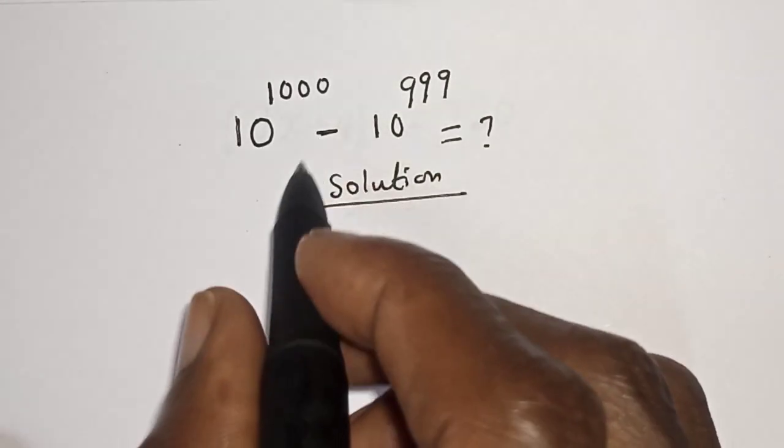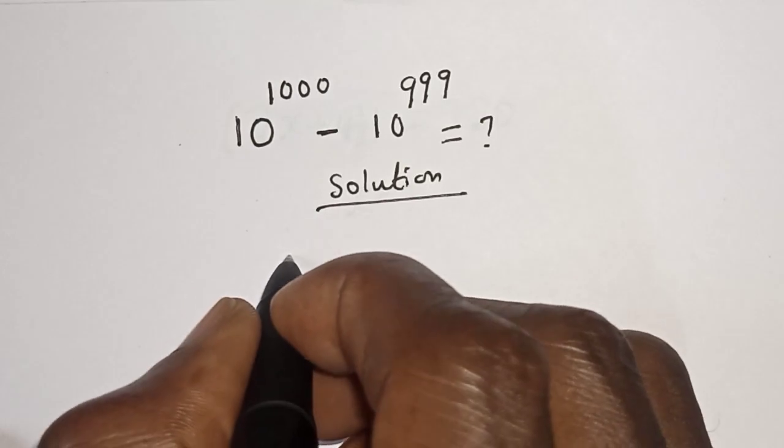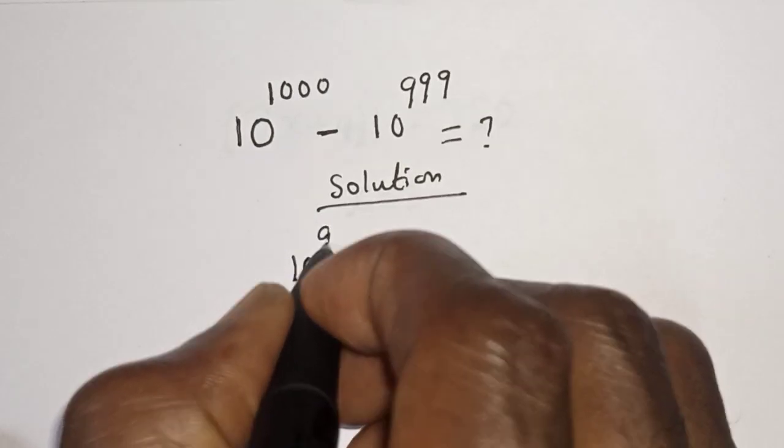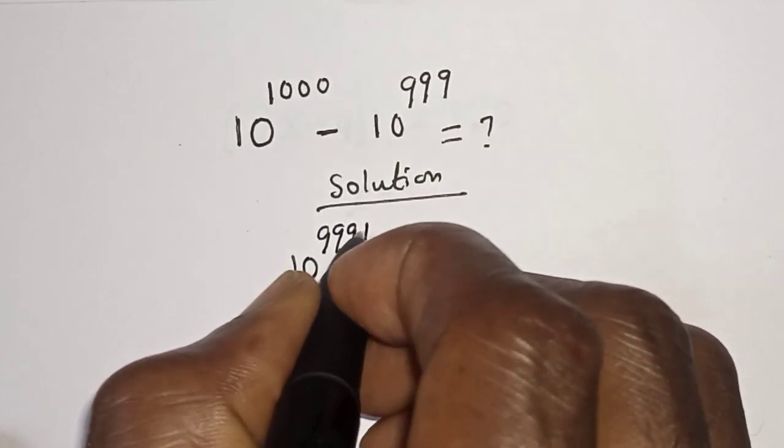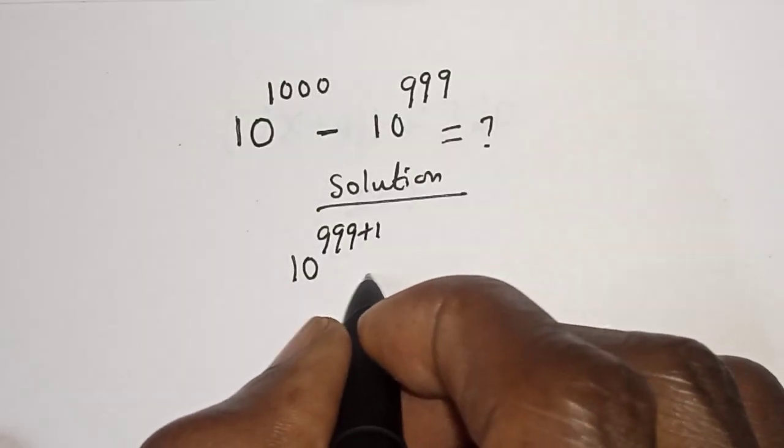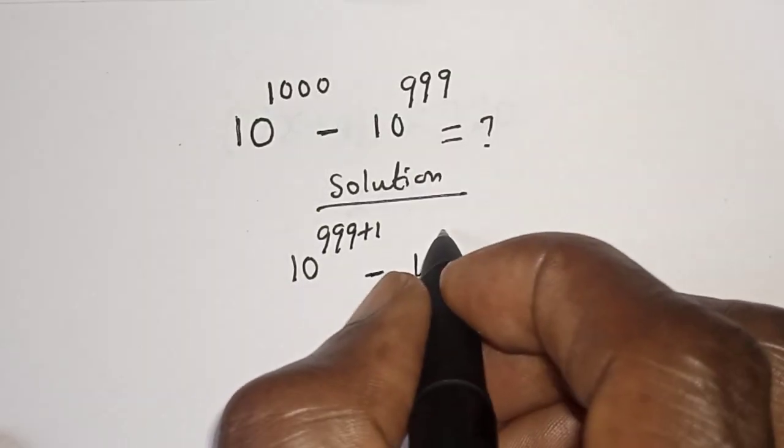10 raised to power 1000 can be written as 10 raised to power 999 plus 1, minus 10 raised to power 999.